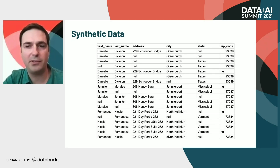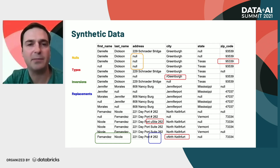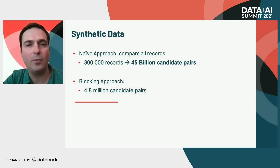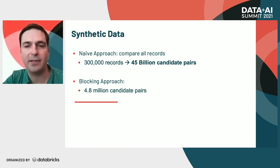Here's a reduced representation of some of the synthetic data we used in development. After generating patient demographic records, we introduced nulls, typos, name inversions, and replacements into the data to hopefully account for some of the errors we might expect. With the synthetic data, we generated 300,000 records. If we were to use the naive approach of comparing records, this would be about 45 billion candidate pairs. By using a blocking approach, we ended up with about 4.8 million candidate pairs.